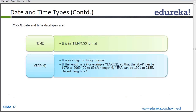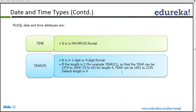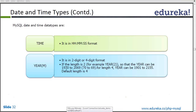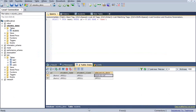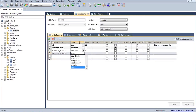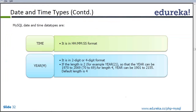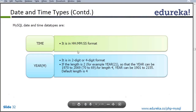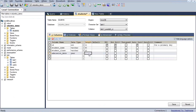We can also have the time data type, which will save only the time and not the date. Then we can have year, where we simply give the length as 2 or 4, and it will save the year value either in 2 digits or 4 digits — like 1970, or it can be 70. This depends on the length of that year field. The default length is 4, so if you give the year data type without any length, by default it will take 4.